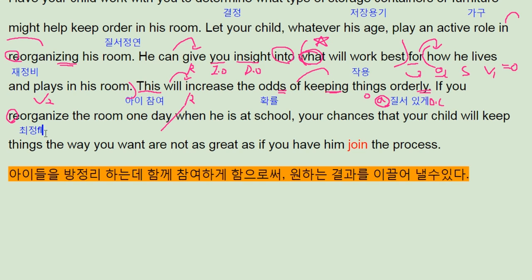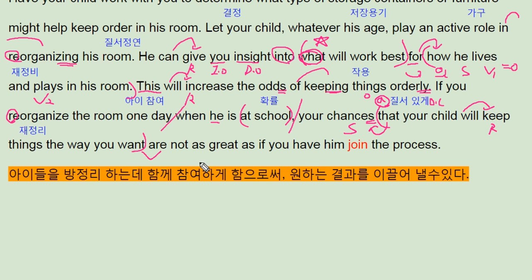네가 방을 재정리한다면 하루, when he — 아이예요 — 아이가 학교에 있는 동안 네가 해준다면, 너의 기회인데, that your child will keep things the way you want까지. 기회들이 복수가 주어였죠. 어떤 경우는 기회보다 확률이라고 해석하는 게 좋아요. 확률인데, 너의 아이가 will 동사원형 keep things 그 다음 the way — 목적보어에 명사로 썼습니다. so you want까지 이렇게 묶어주는 거예요. 너가 원하는 방식으로 방 정리를 하게 될 확률들은.